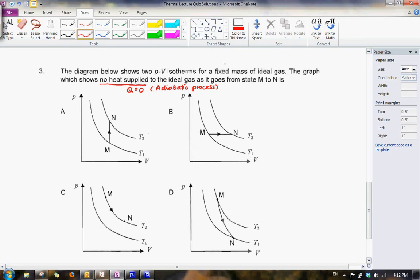So one quick way to do this question is to eliminate the processes that are non-adiabatic and see whether we can come up with the answer. So let us look at option A. In option A, what we can see is that the volume is constant, so this is an isochoric process, so this is not an adiabatic process.